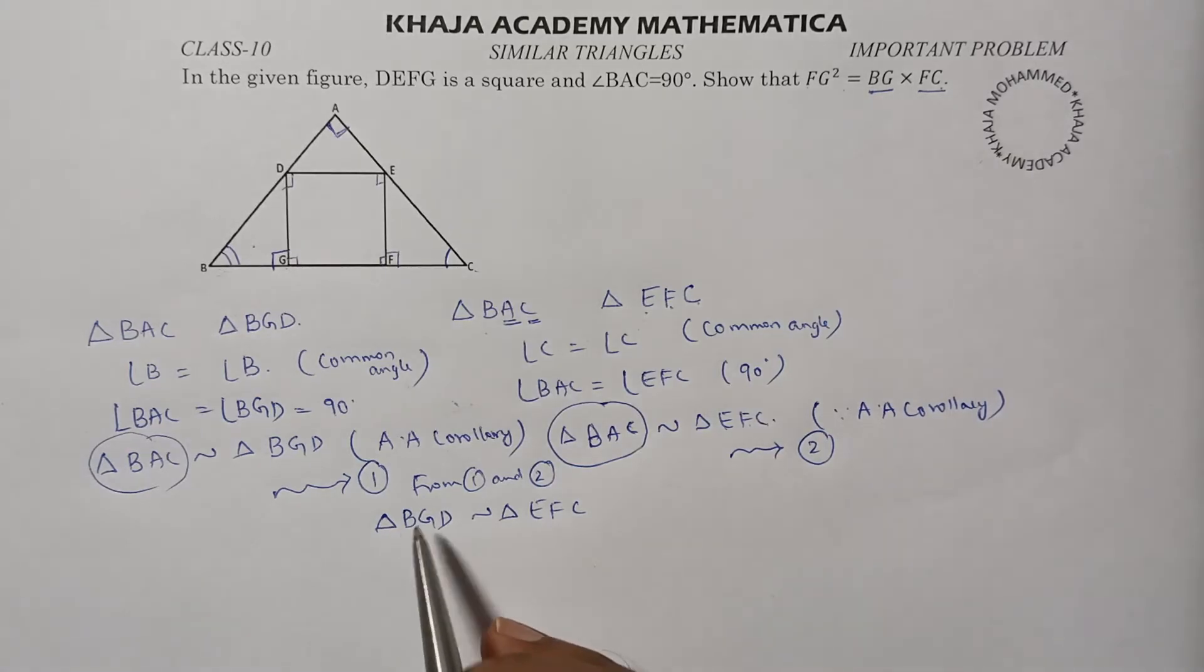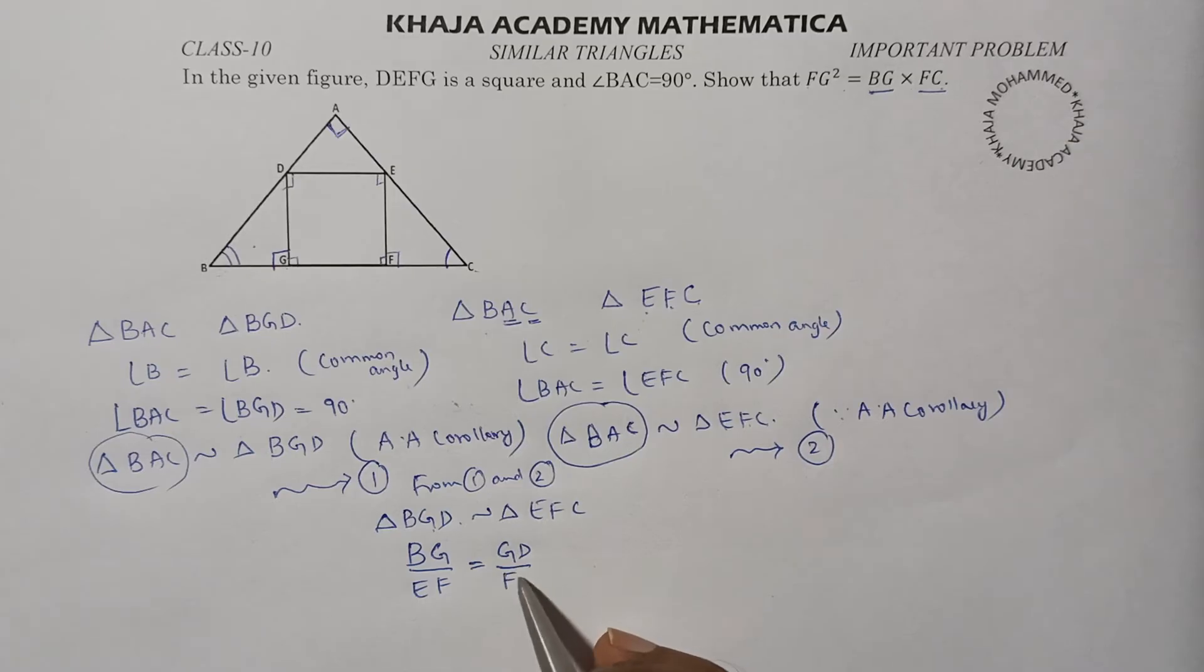For these similar triangles, the sides are in proportion: BG by EF equals GD by FC equals BD by EC.